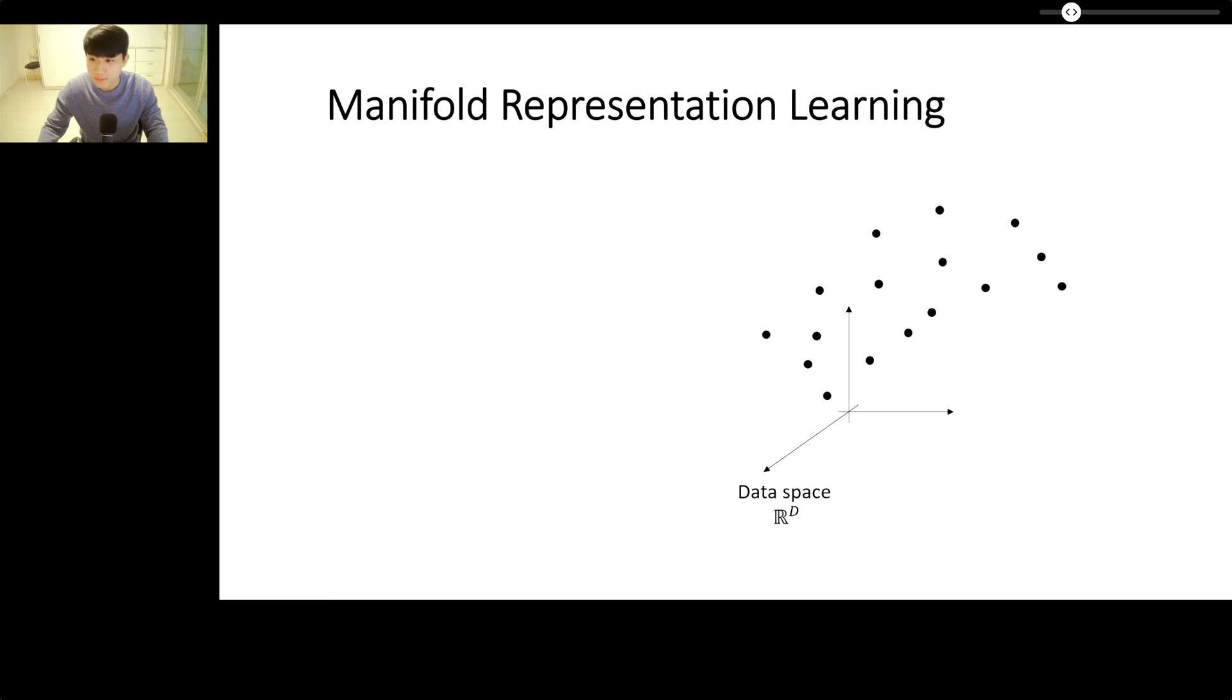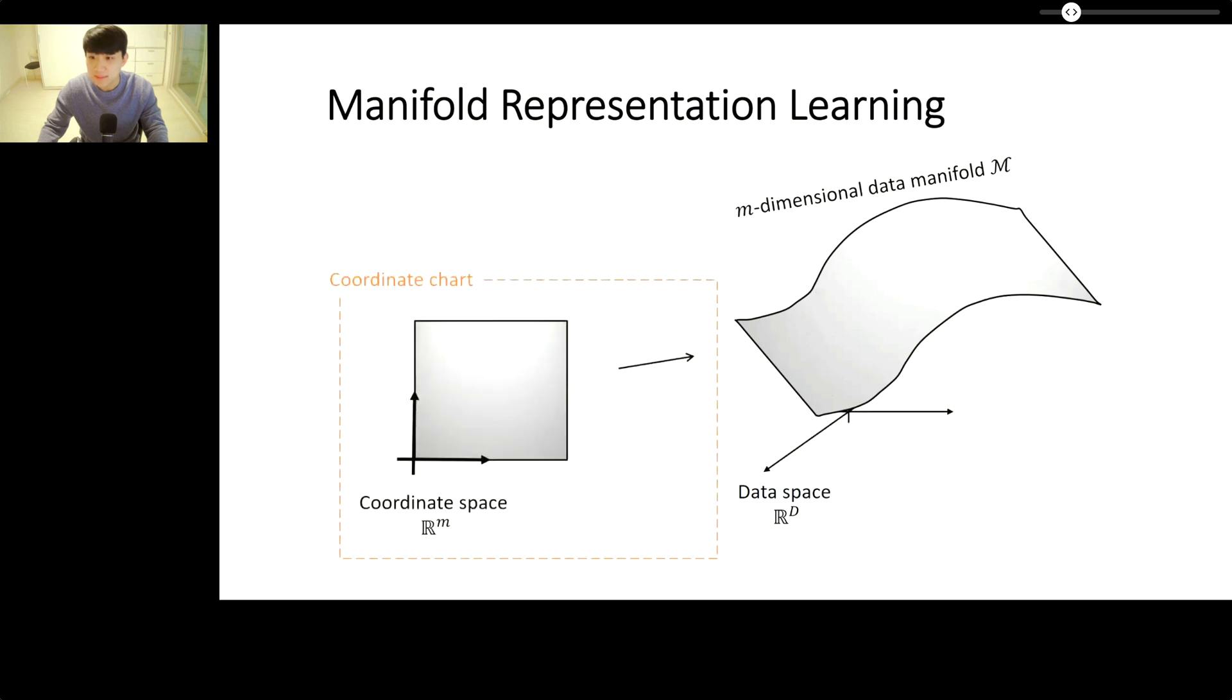Under this hypothesis, the data representation learning problem consists of two components. First, we need to fit a lower-dimensional manifold to the data. And second, find a coordinate chart for the constructed data manifold. Then the coordinate space becomes a low-dimensional representation space.